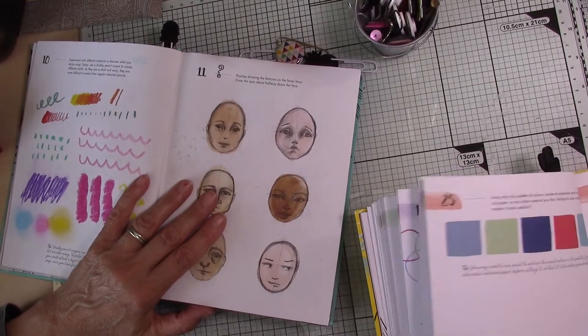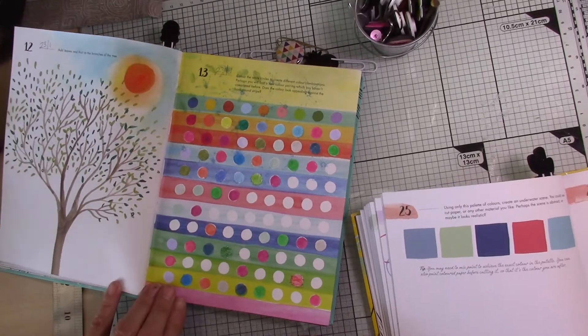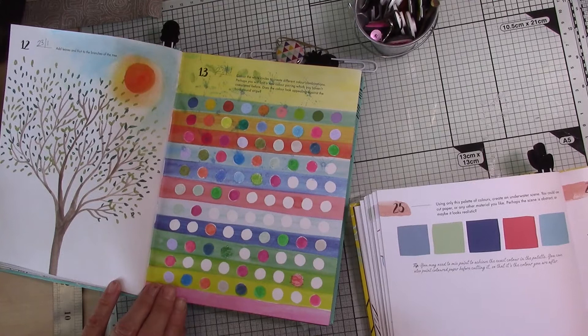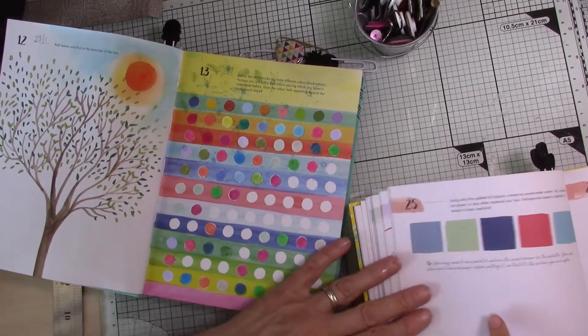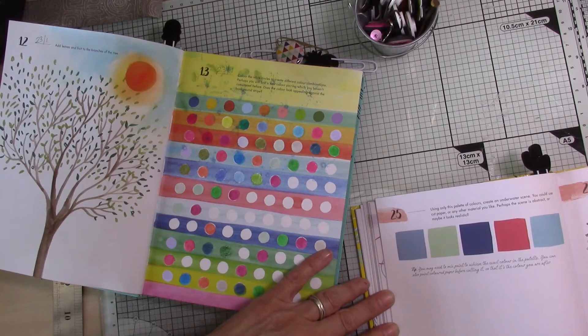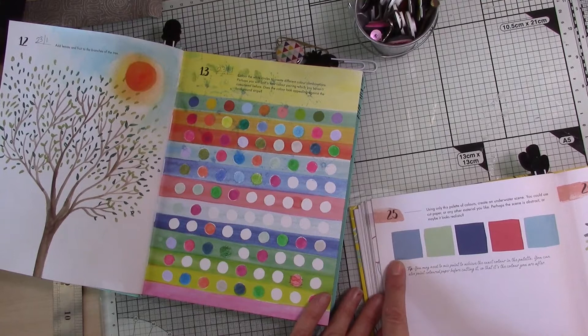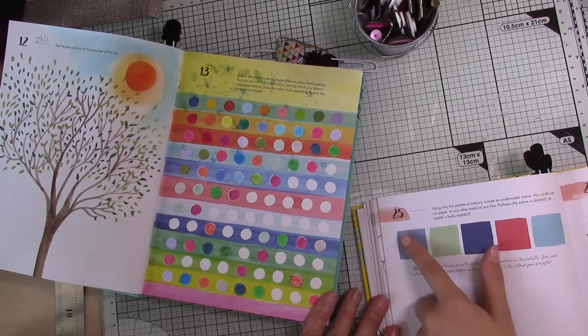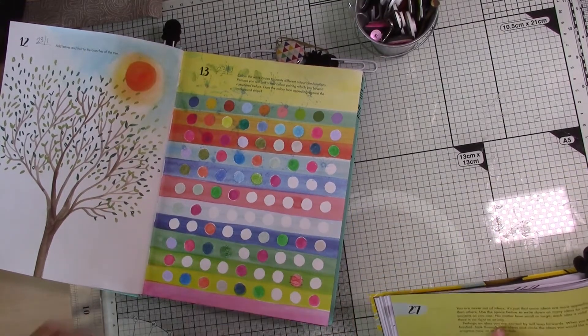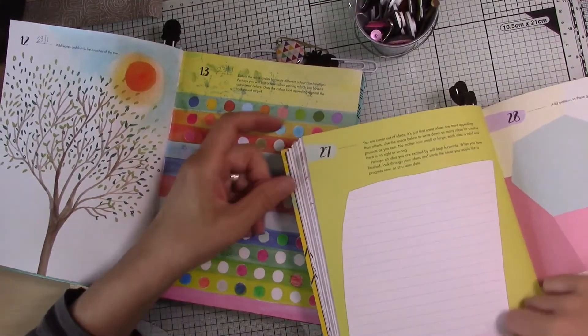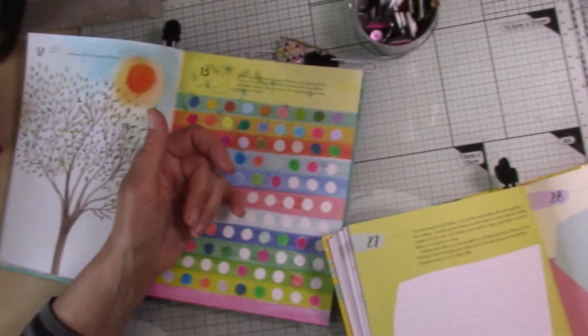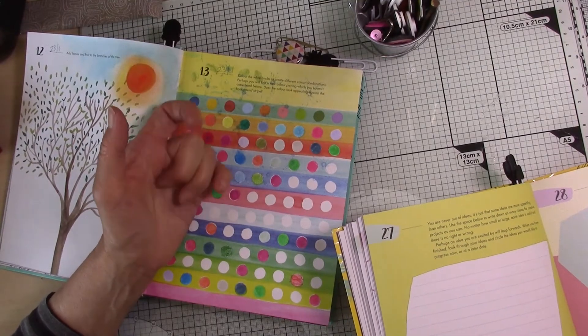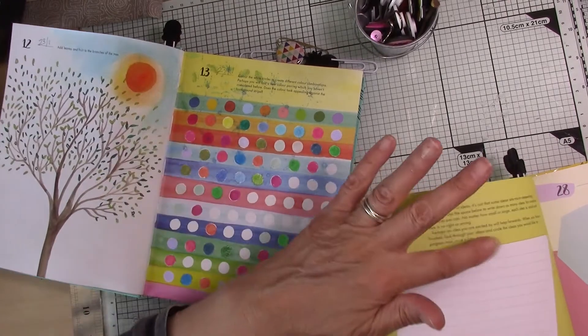I suppose that's because it's getting your mind working. Yeah. Using only this palette of colors, create an underwater scene. Oh that's quite good. Then the tip is you may need to mix paint to achieve the exact color in the palette. You can also paint colored paper before cutting it so that it's the color you are after. So you'd have to find some way of getting those colors and you've got to try and make it into an underwater scene. That's quite tricky actually. That's it, under energetic as well. Yeah, quite good. If you're never out of ideas, if you just want to jot down some ideas, you could write it down in that piece of paper. Oh yeah, good idea. And then it says reflect at the bottom, if I can get it in the camera. There, reflect.